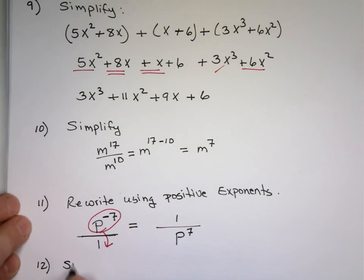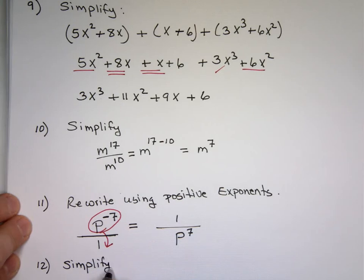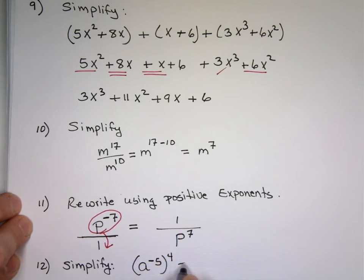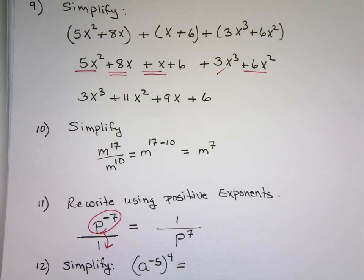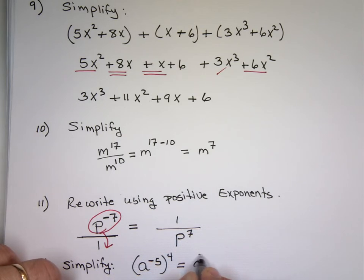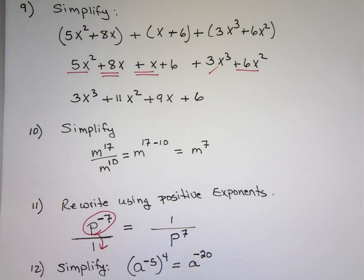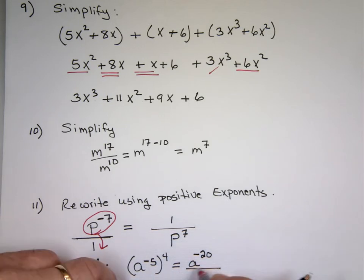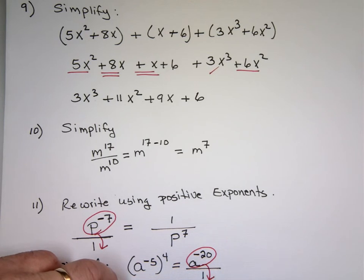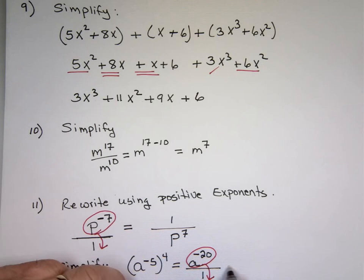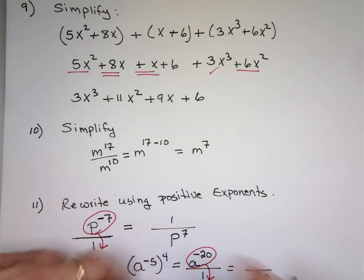Simplify: a to the minus 5, to the 4th power. Power to power — multiply the exponents. Negative 5 times 4 equals negative 20. They don't like negative exponents, so that's over 1. Cross the line, change the sign — bring this one down to the bottom. It becomes a to the 20th in the bottom, and since the whole thing moved down, what's left on top is 1. So the answer is 1 over a to the 20th.